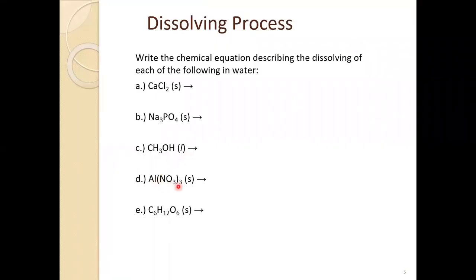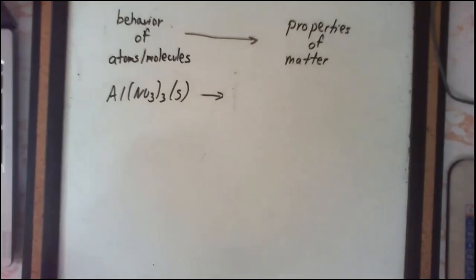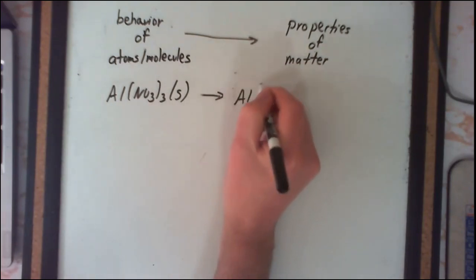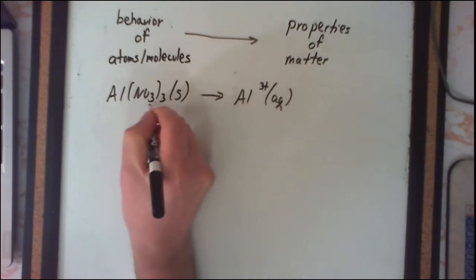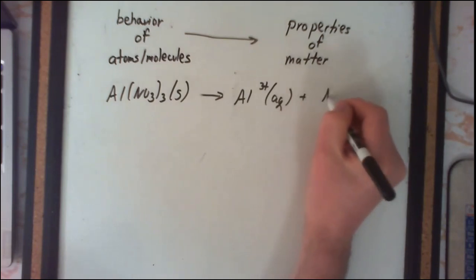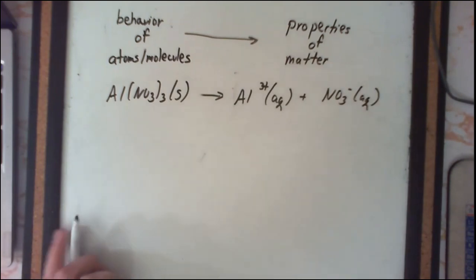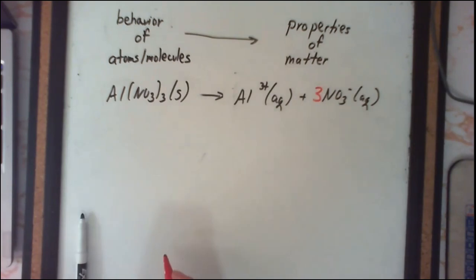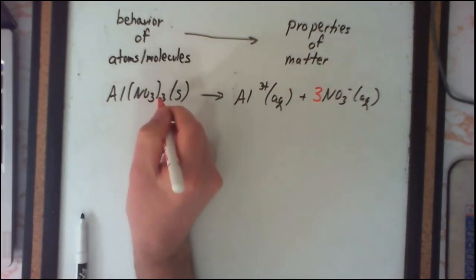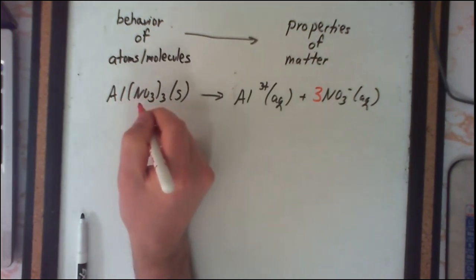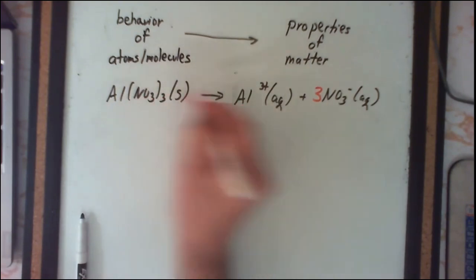The fourth example is aluminum nitrate. Is it ionic or molecular? It's ionic because we have the metal aluminum, and also because nitrate is a polyatomic ion. Being ionic, when it dissolves we break it into its individual ions: aluminum ions (aqueous) and nitrate ions (aqueous). To balance, we need three nitrate ions — the subscript three tells us we need three nitrates for every one aluminum to give an electrically neutral compound. So dissolving gives one aluminum ion and three nitrate ions.